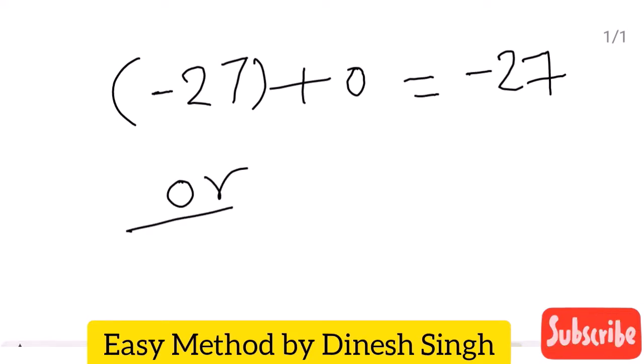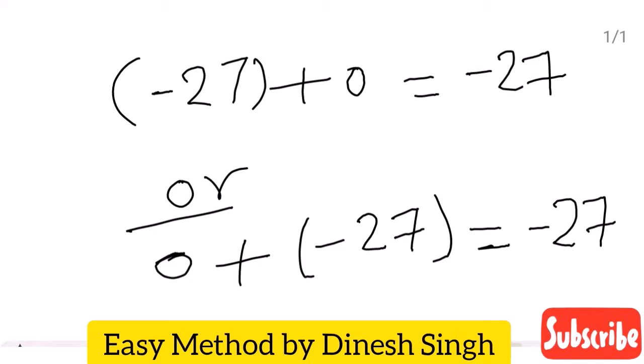Or 0 plus 27 is equal to 27. If we add any negative value to 0, the answer will be that negative value.